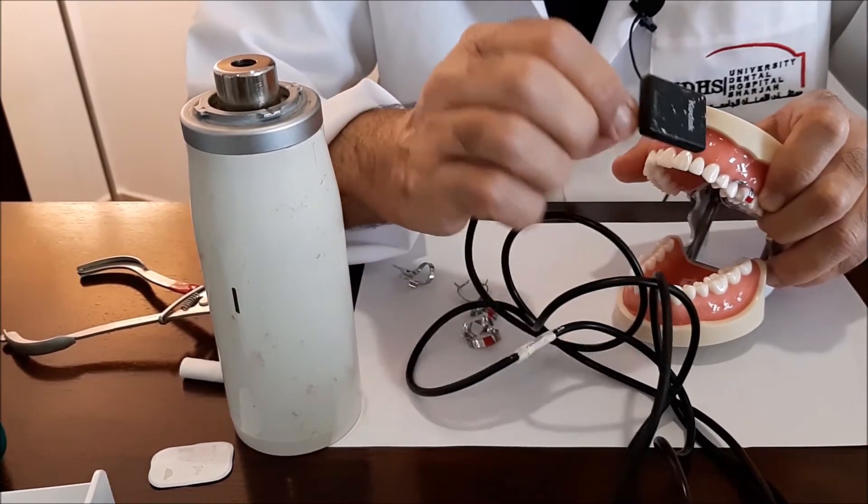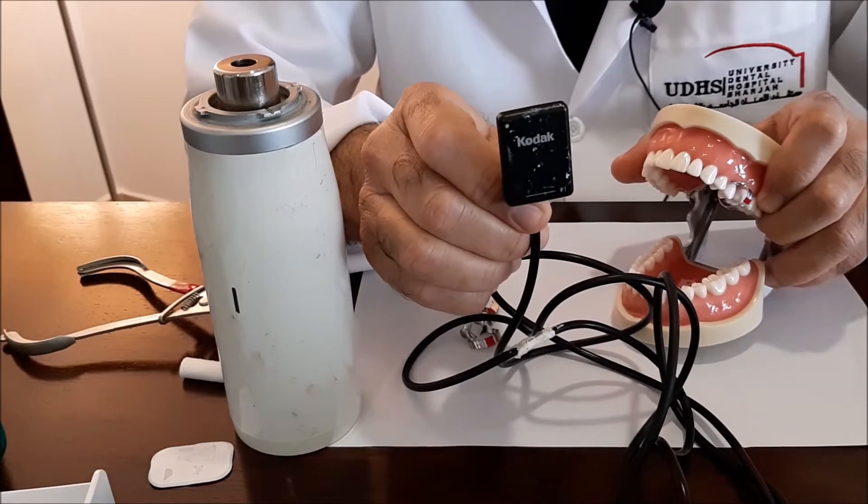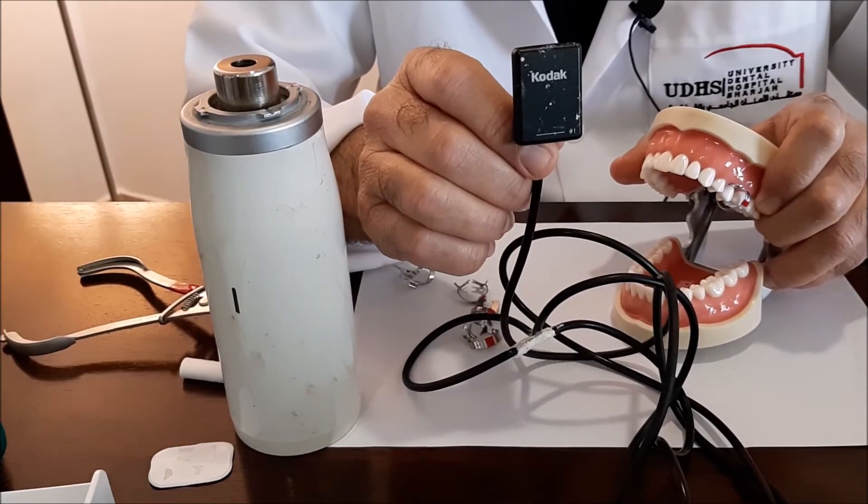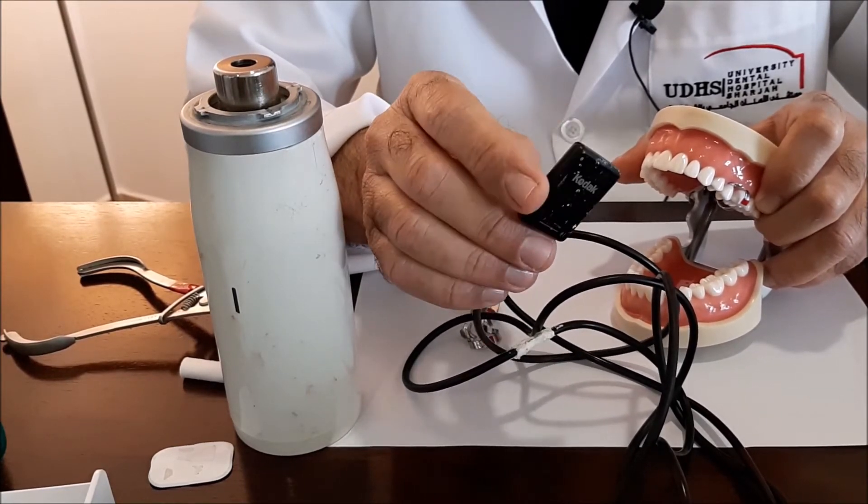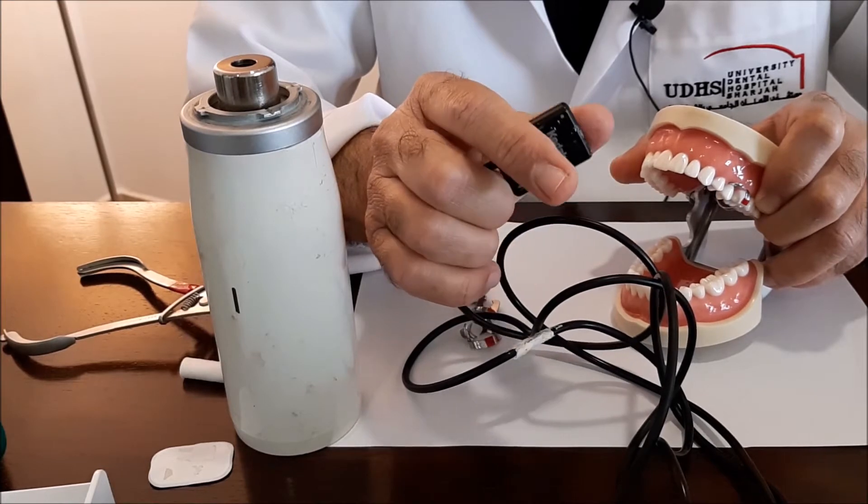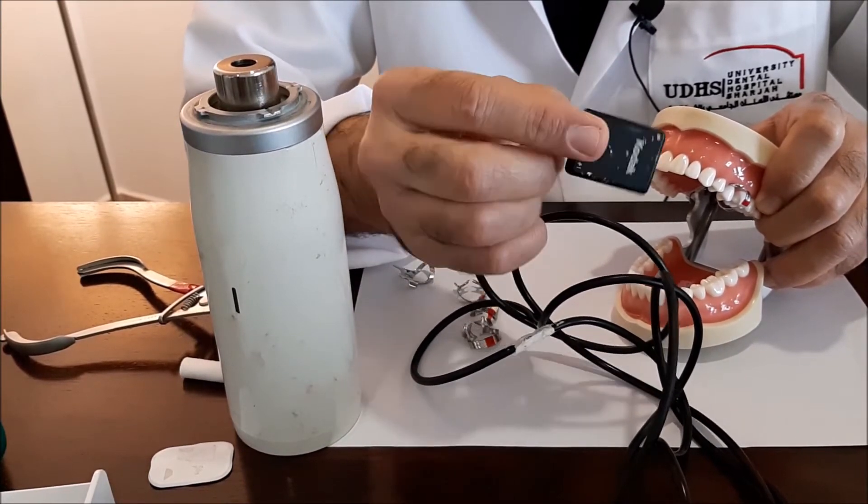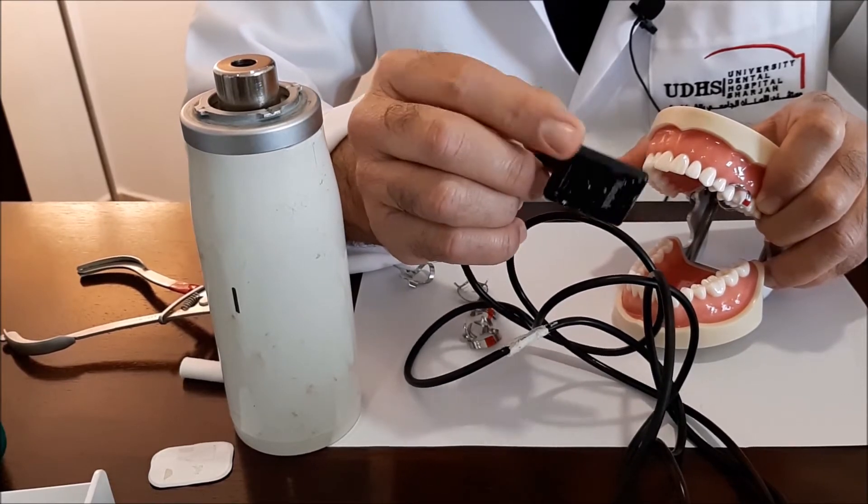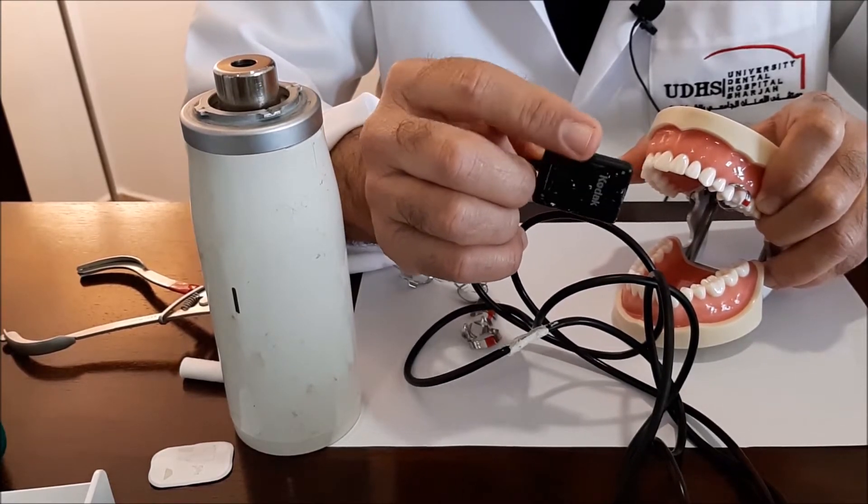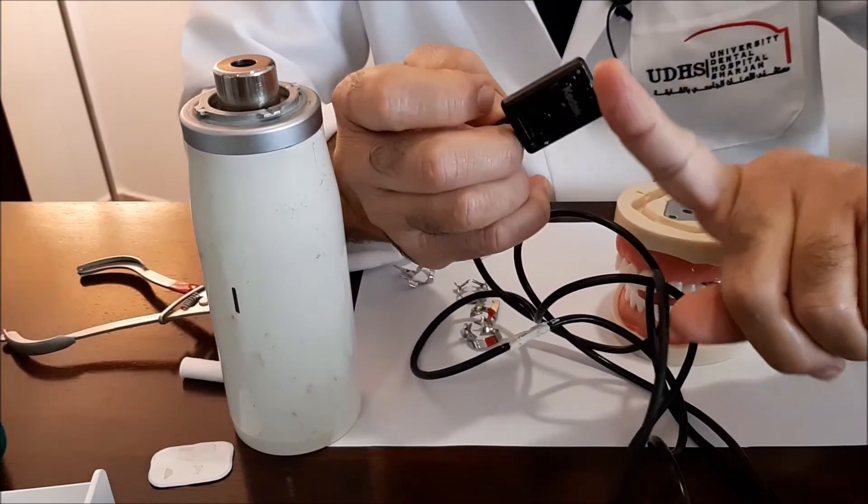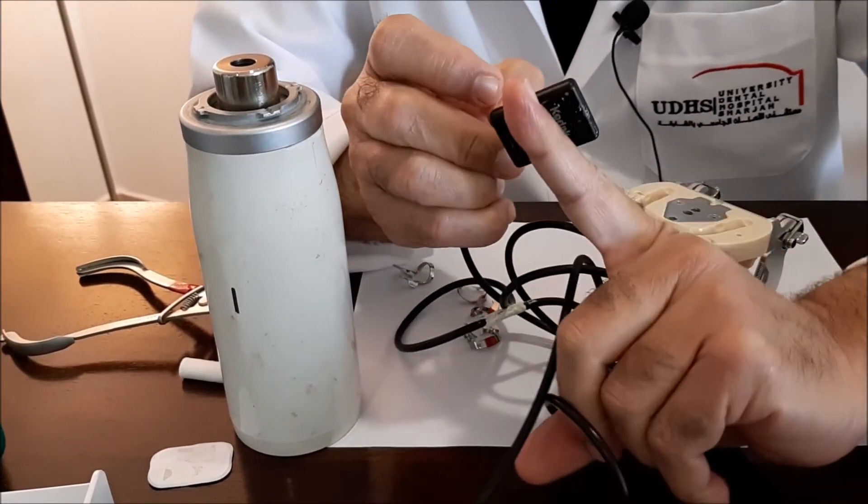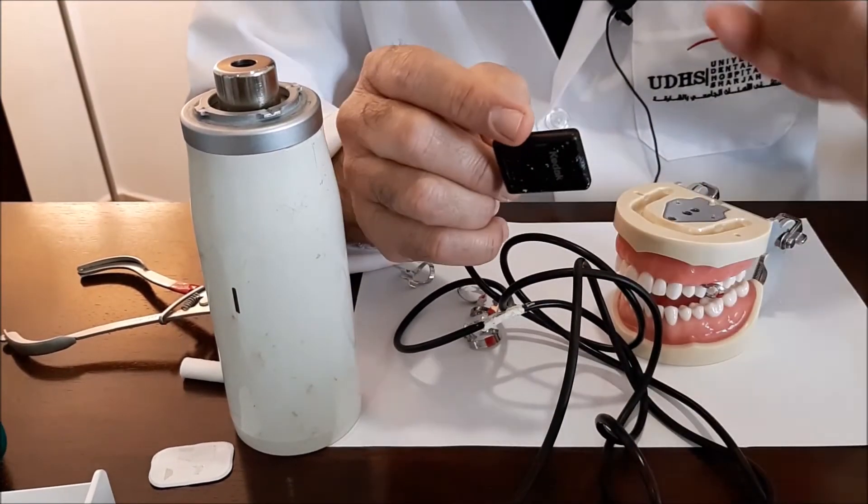However, sometimes it is possible that we place the sensor vertically if we feel that this is comfortable for the patient and if we don't want to miss the apex of the tooth. Sometimes when we place the sensor in a horizontal direction, if the tooth is long we might miss the apex of the tooth.